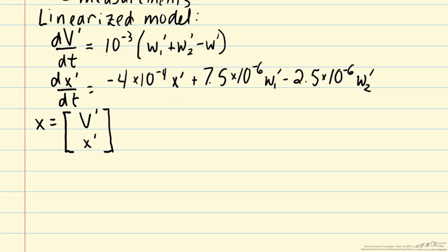And next we need to figure out what should be in our input vector, our U vector. So I said that is anything that is either a manipulated variable or a disturbance variable. And so here in the blending process we have W1 prime, W2 prime, and W prime.